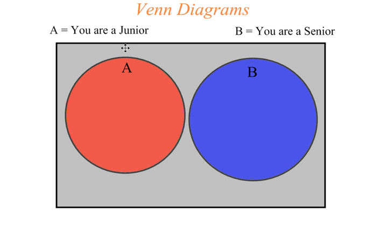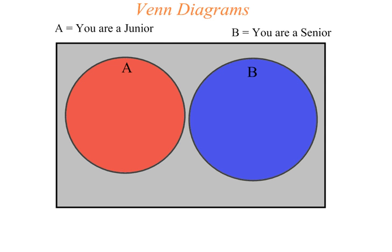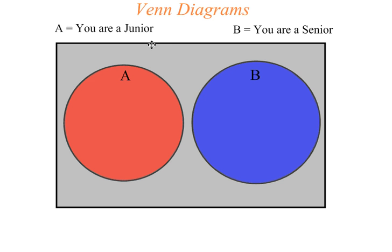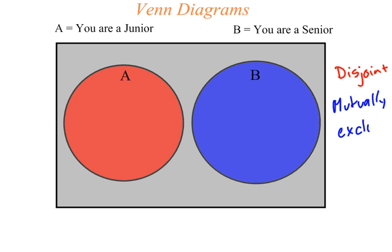Let me show you a couple of easy examples. If you are a junior in high school and another event is being a senior in high school, being a junior and being a senior do not overlap — you cannot be both at the same time. That is called disjoint events, also known as mutually exclusive events.